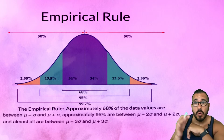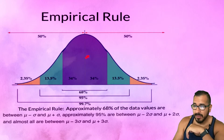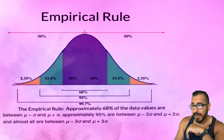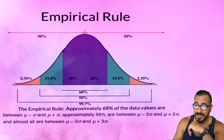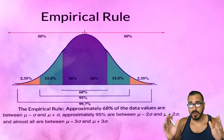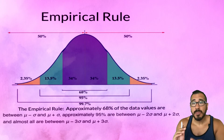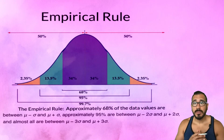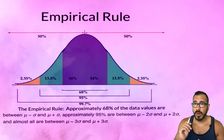If we have this bell shape, we're allowed to use the empirical rule. Because it's symmetric, we know that half of the values are going to lie to the left of the mean and half to the right. If you go out one standard deviation in both directions, 68% of our data points are going to be within one standard deviation of the mean.